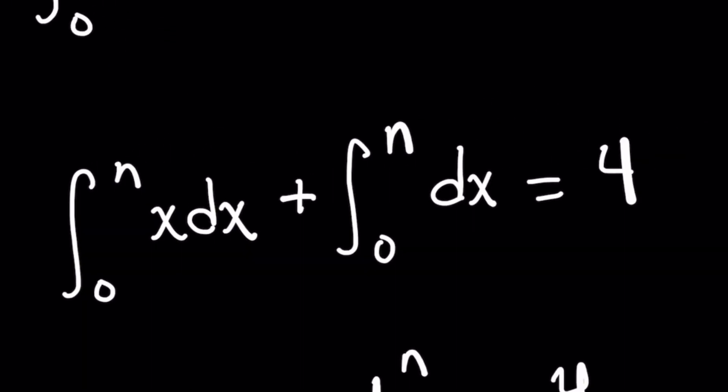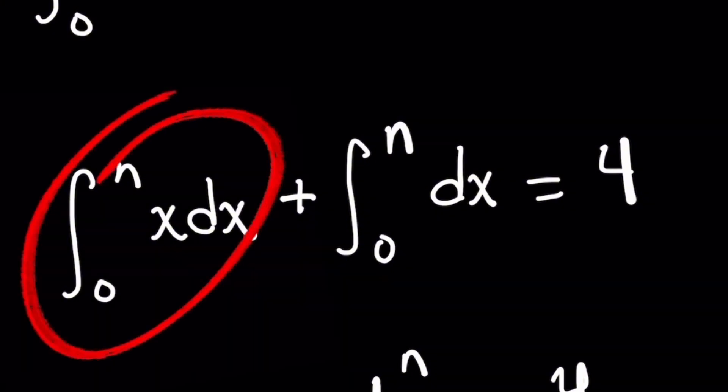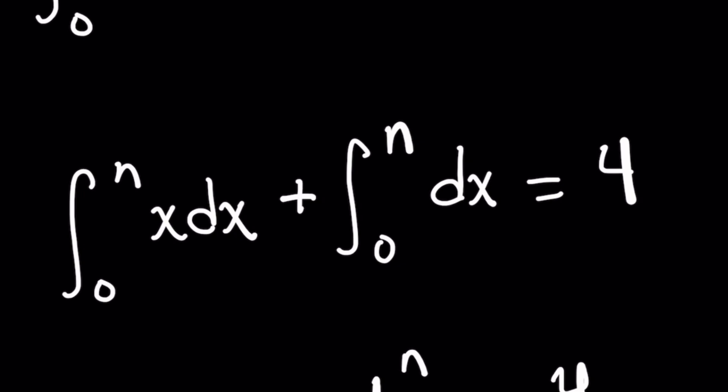I'm going to split up x plus 1 as a sum of the integral from 0 to n of x dx plus the integral of 0 to n dx. And this all equals 4.